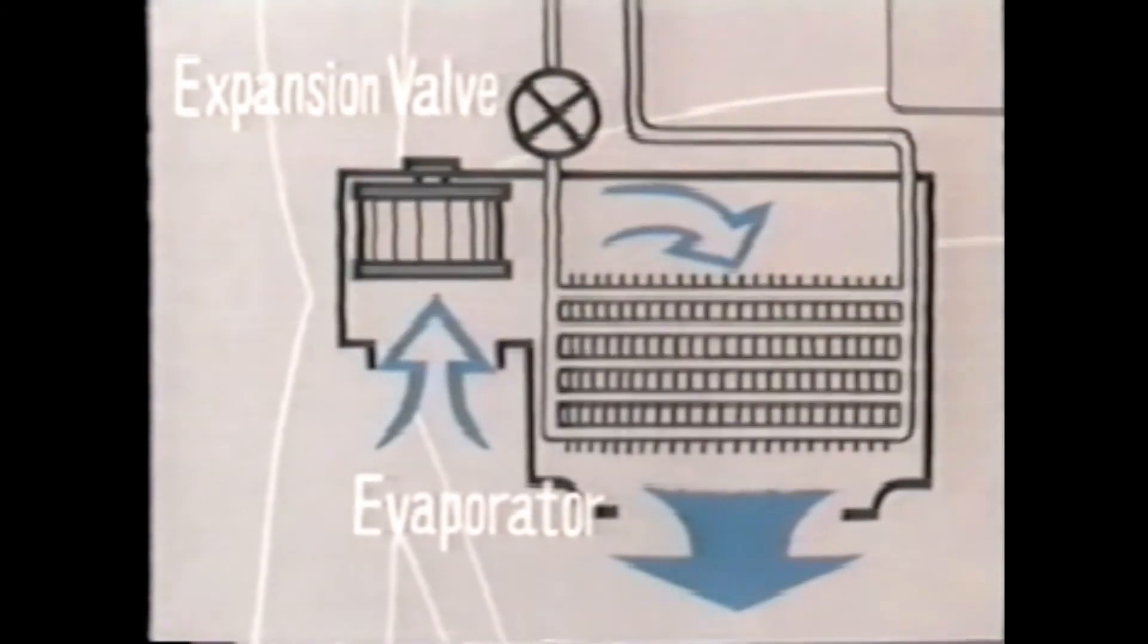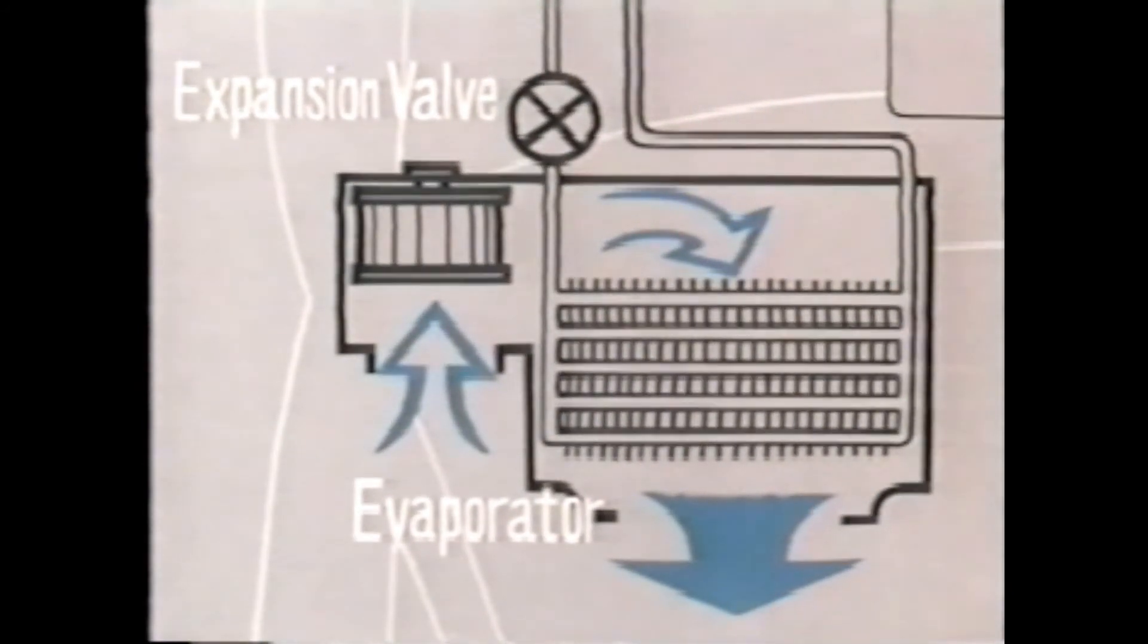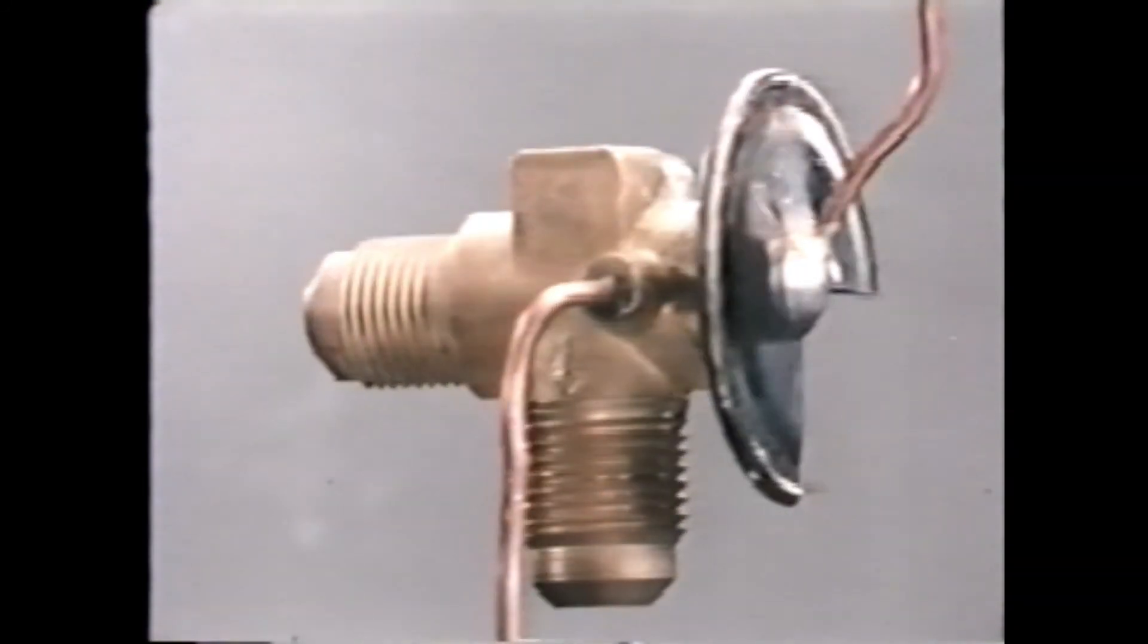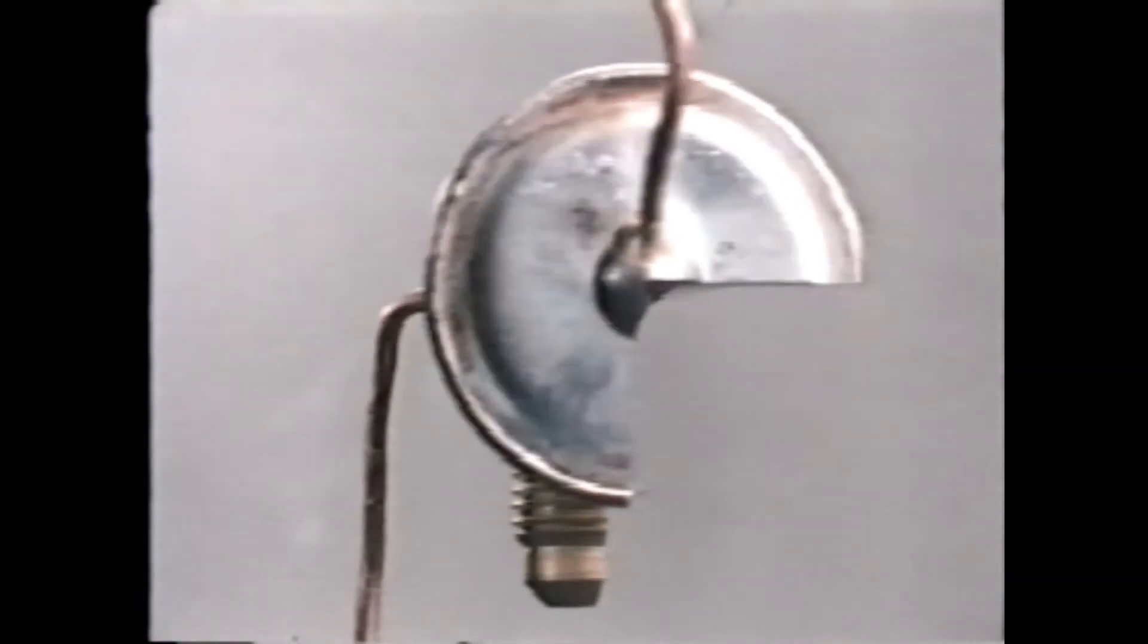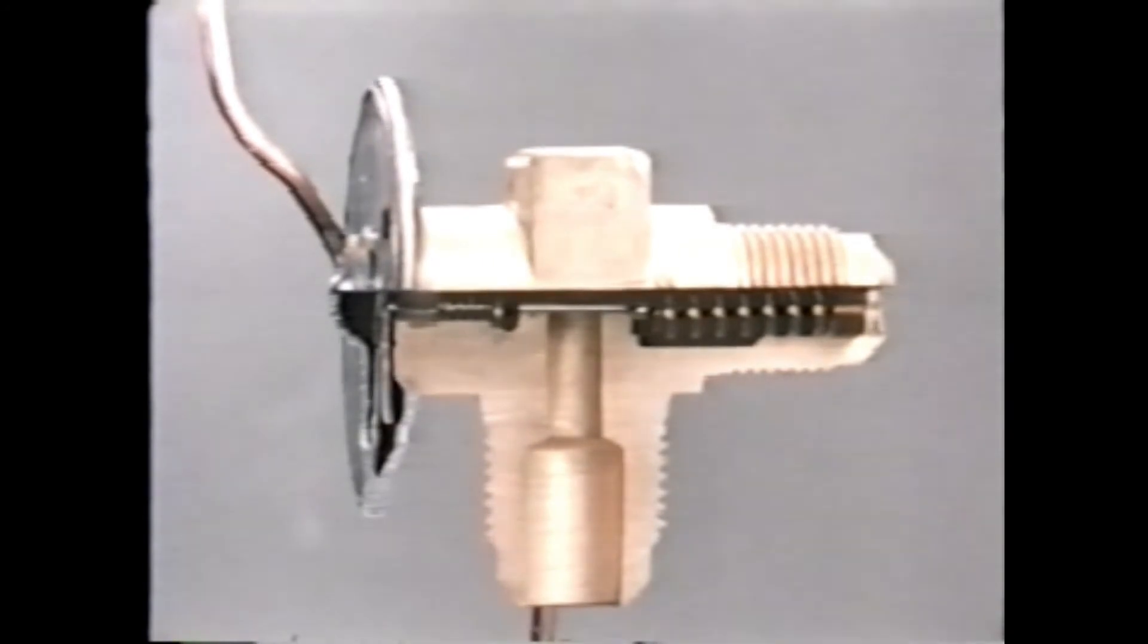The expansion valve is set at the inlet of the evaporator. The expansion valve decompresses the high pressure refrigerant by throttling, turning it into a fog-like vapor before sending it to the evaporator.